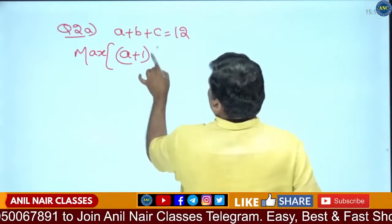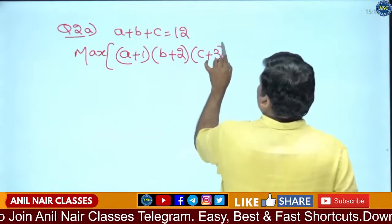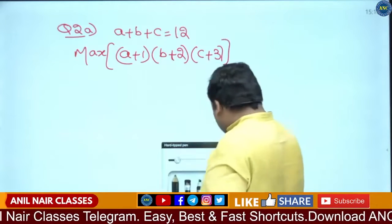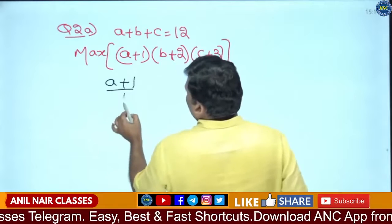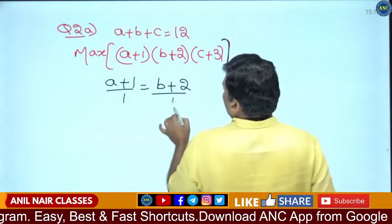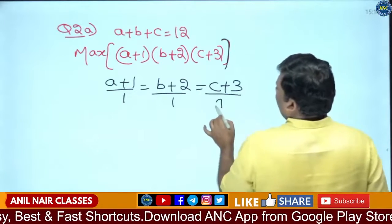A plus 1, B plus 2, C plus 3 - this will be a product. What we have to do: we require A plus 1 by 1 equivalent to B plus 2 by 1, equivalent to C plus 3 by 1.